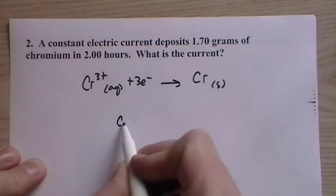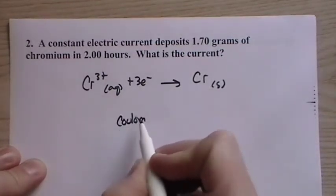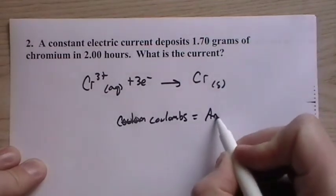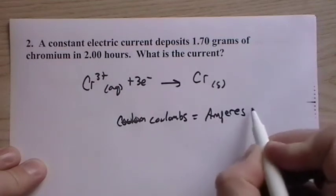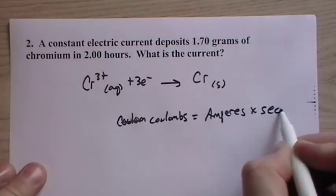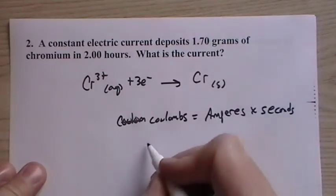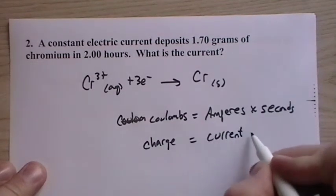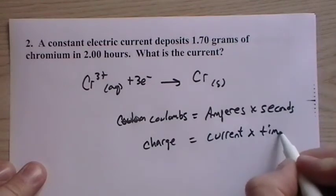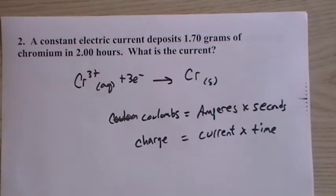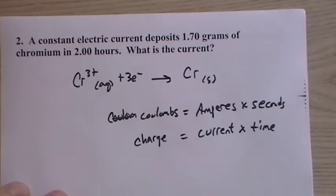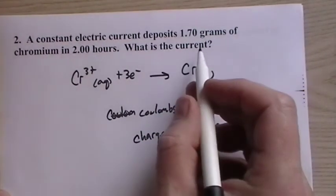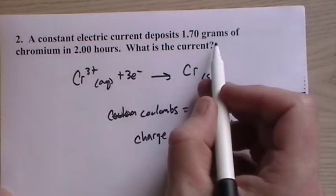It says that a constant current deposits 1.70 grams of chromium. Now, the other equation that we're going to use is coulombs equals amperes times seconds. Or charge equals current times the time. So we're going to use that in one form or another. So we have, let's see what we have. We have, we start out, it says we have 1.7 grams of chromium.